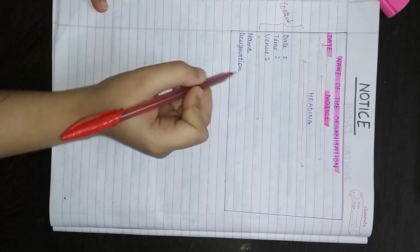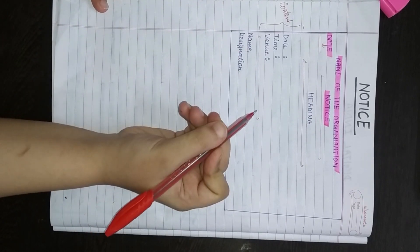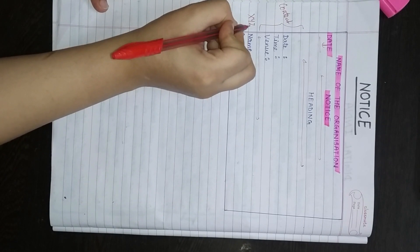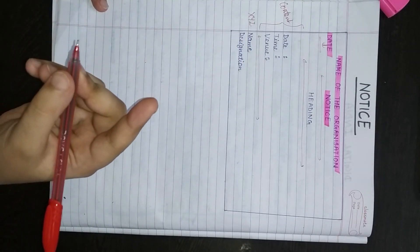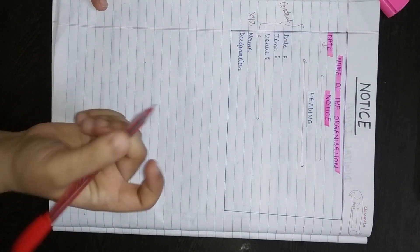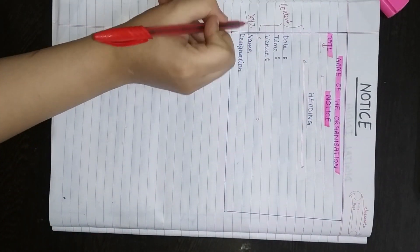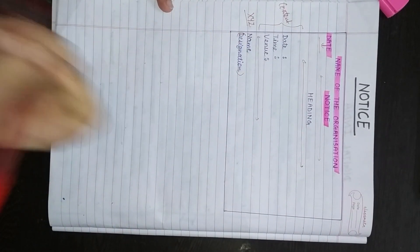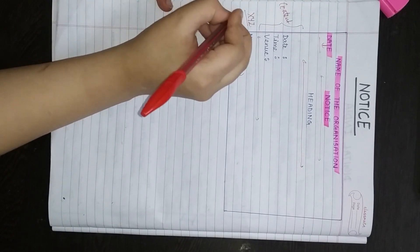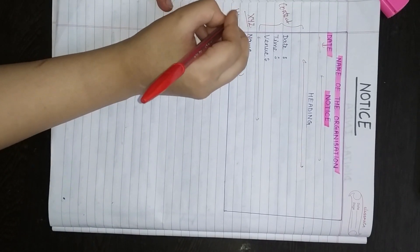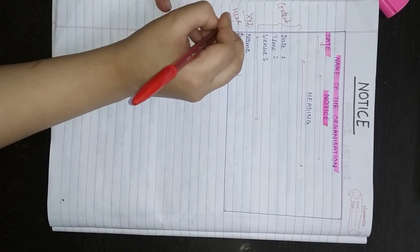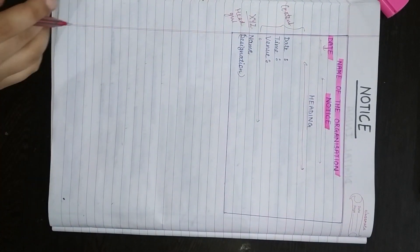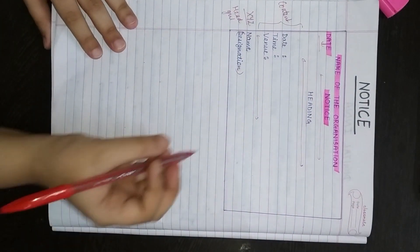After the content, you leave a line and write the name. If you are writing the notice, you write your name here — XYZ or whatever name is given in the question. After the name, you write the designation. For example, if you are head girl or head boy, you mention that here. It will already be given to you in the question.